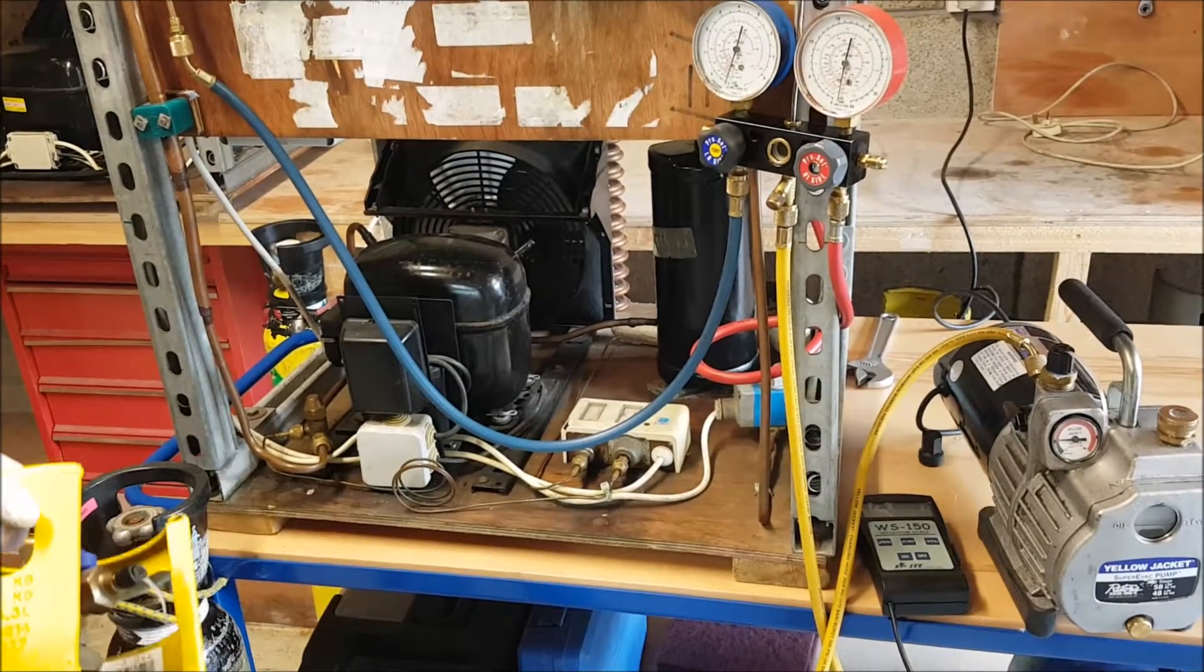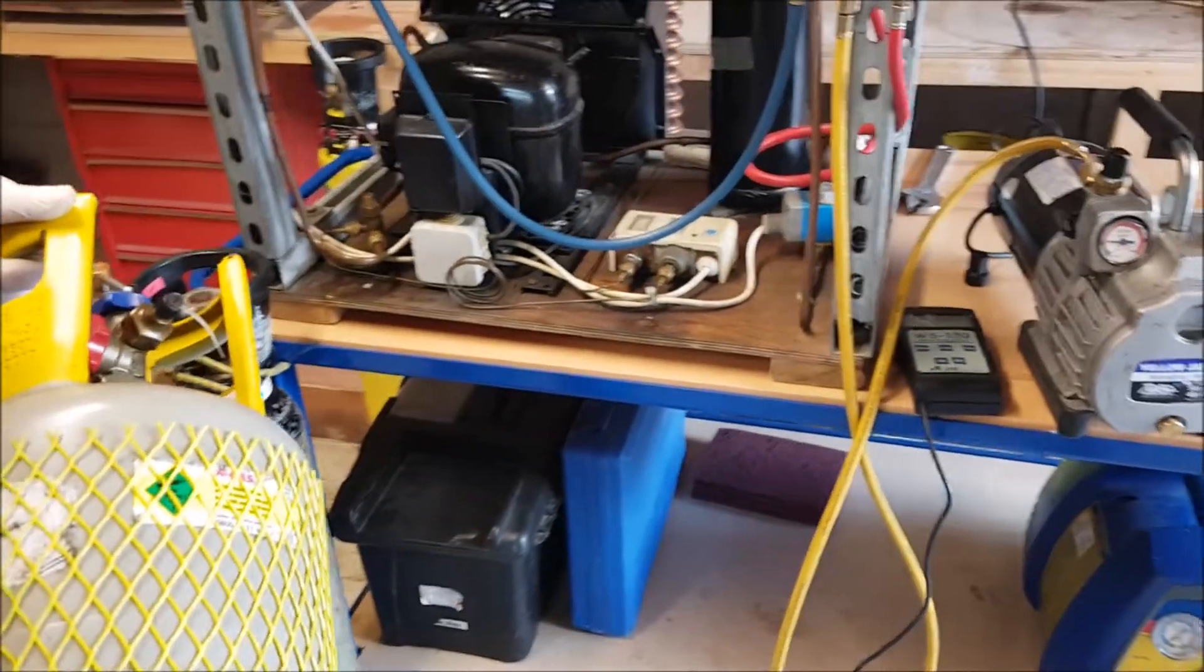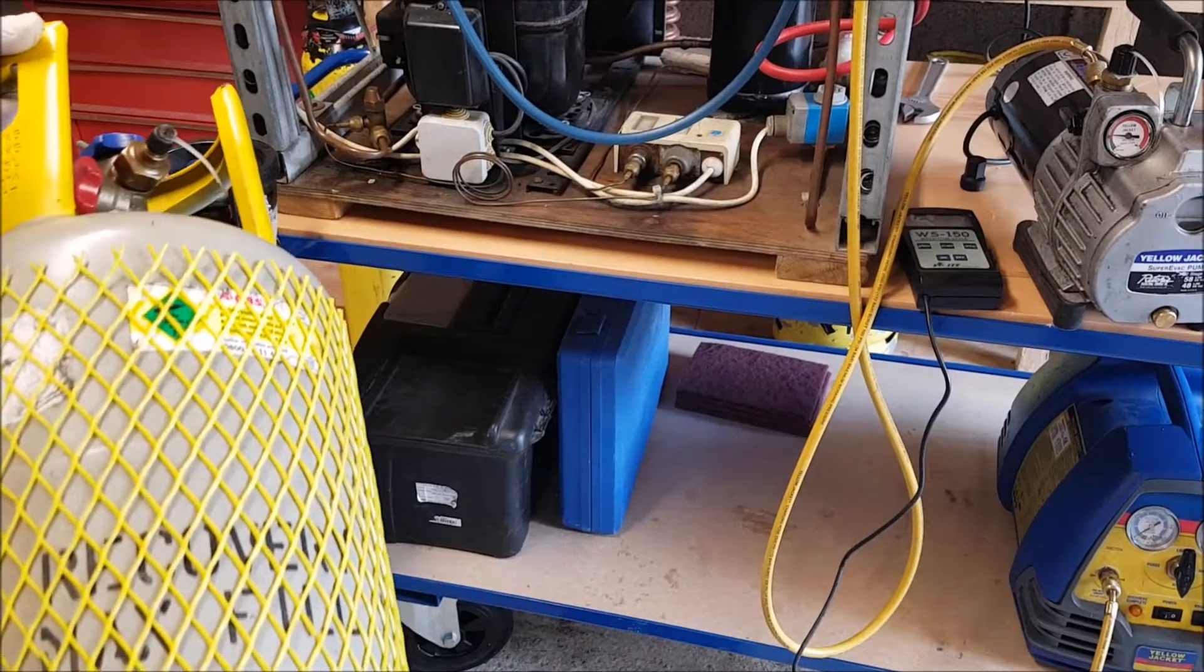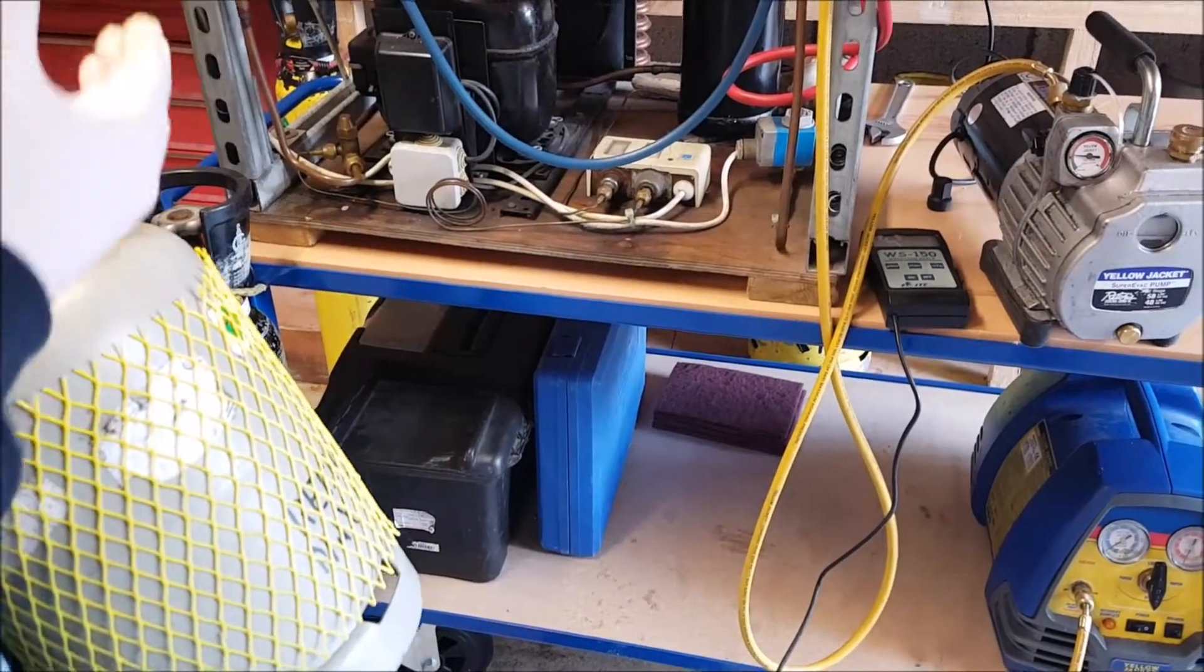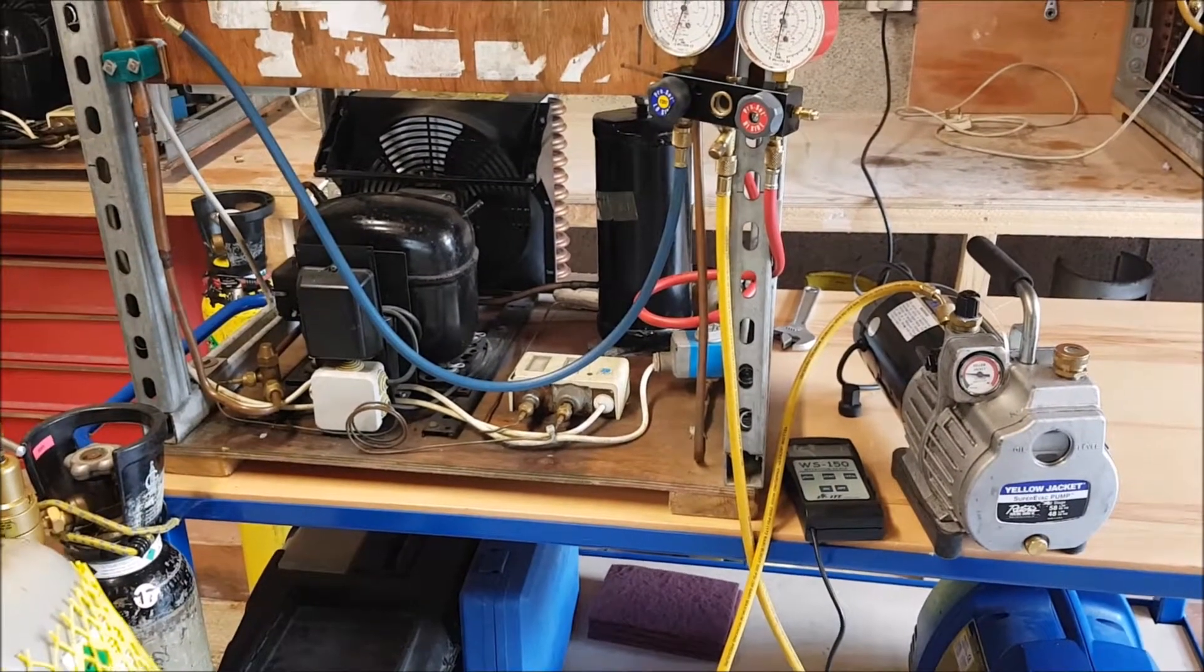We're now going to use our recovery bottle that we'd already recovered refrigerant into. This was labeled as recovered refrigerant and it was labeled as good for reuse. It's basically refrigerant that we had removed from our system while we carried out our remedial repairs, and now we're putting the same refrigerant back into the system.